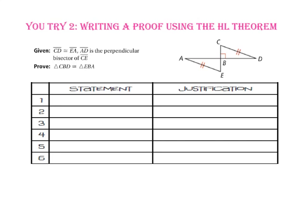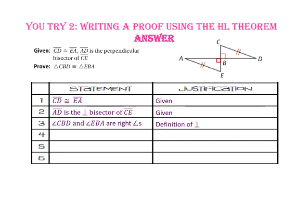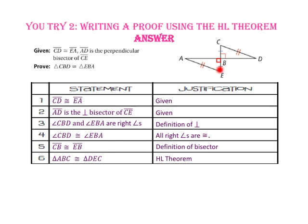Pause the video and do you-try number two. Here, we want to prove that triangle CBD is congruent to triangle EBA. It is given that side CD is congruent to side EA. We are also given that segment AD is the perpendicular bisector of segment CE. By the definition of perpendicular, angle CBD and angle EBA are right angles, and because all right angles are congruent, angles CBD and EBA are congruent. By the definition of bisector, segment CB is congruent to segment EB. Finally, triangle CBD is congruent to triangle EBA by the hypotenuse-leg theorem — two right triangles with congruent hypotenuses and one pair of congruent legs.